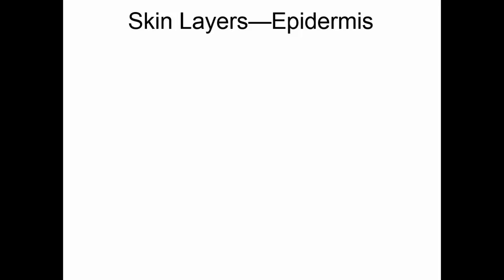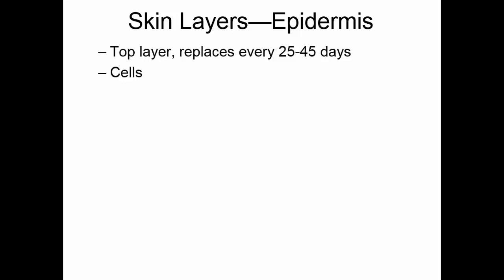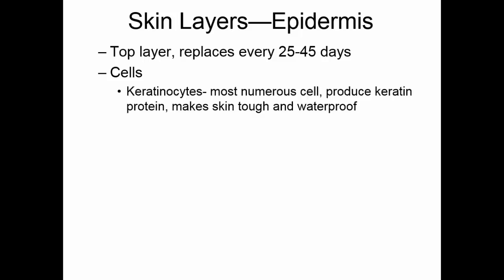There are two basic layers to the skin: the epidermis, which is the epithelial layer, and the dermis, which is the connective tissue layer. The epidermis is the top layer and replaces itself every 25 to 45 days. There are several different kinds of cells in the epidermis, but the primary ones are the keratinocytes — the most numerous cells. They produce a protein known as keratin, which makes the cell very tough and waterproof, adding to the protective function of the skin.